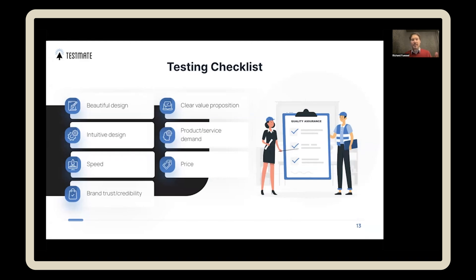Just to recap: beautiful design — clean and modern. What beautiful design really means is intuitive design: can people find what they're looking for? Am I answering questions in the right places? Speed — is it fast to find, fast to go through, not unnecessarily slow? Am I providing trust and credibility to the page — is there a reason for people to believe what you're putting out there? And is the value proposition clear — do users understand why you are different to the competitors? Has that been clearly spelled out?